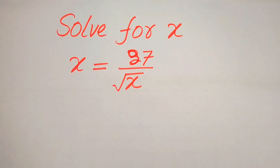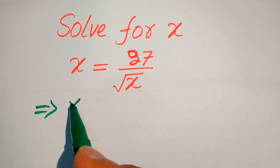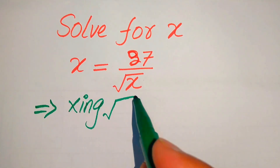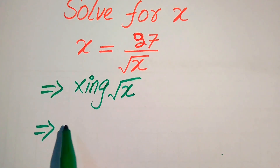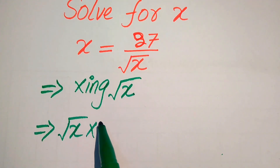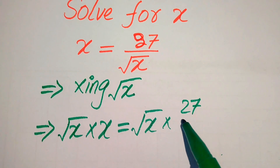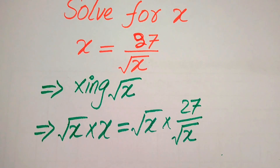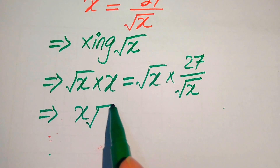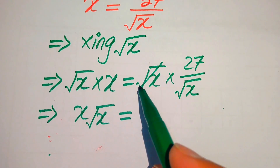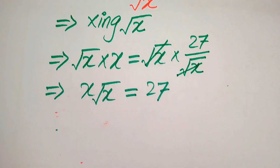The very first thing we are going to do is move this square root of x to the left hand side — in other words, we will multiply both sides by square root of x. So when we multiply this equation by square root of x, it will be written as square root of x multiplied by x is equals to square root of x multiplied by 27 divided by square root of x. These two square root of x terms cancel out and we get 27 only.